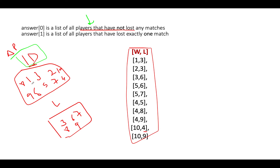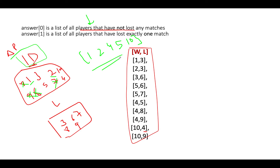Walking through: is 1 in LoserSet? No — add 1 to the answer. Is 2 in LoserSet? No — add 2. 3 is in LoserSet — skip. 4 is not in LoserSet — add 4. 5 is not in LoserSet — add 5. 6 is in LoserSet — skip. 7 is in LoserSet — skip. 8 is in LoserSet — skip. 9 is in LoserSet — skip. 10 is not in LoserSet — add 10. We have successfully identified all IDs that have not lost a single match.